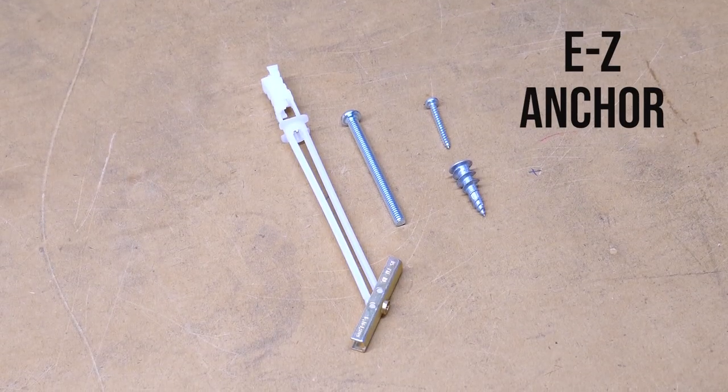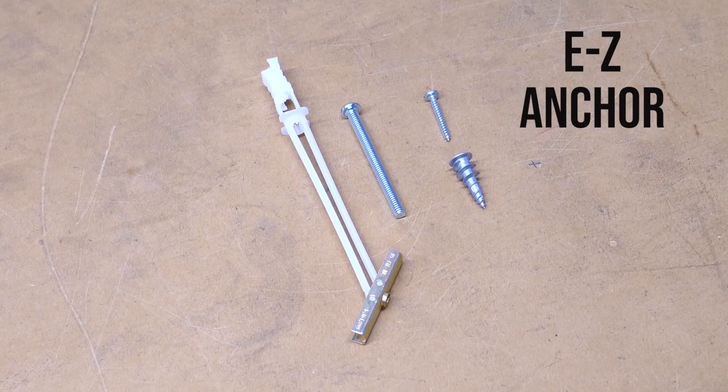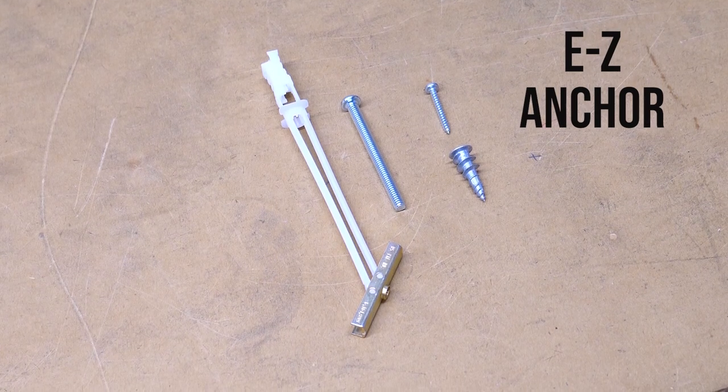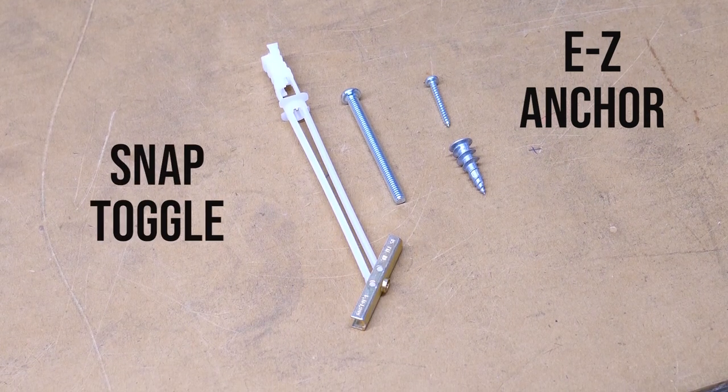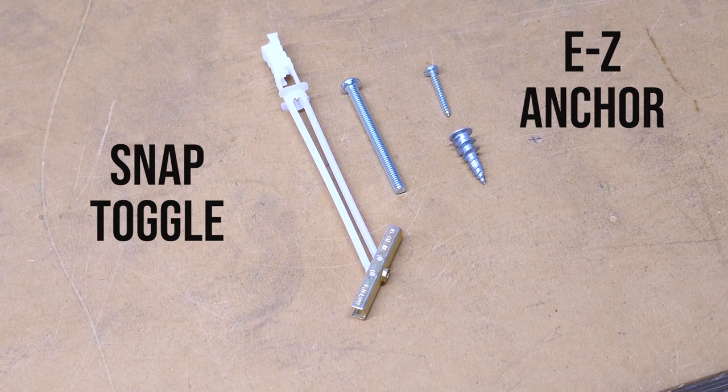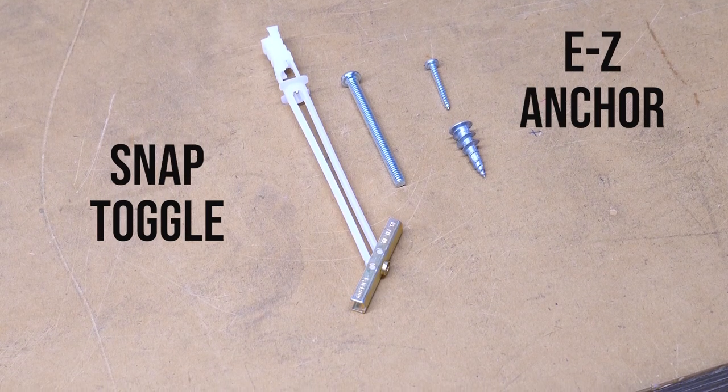My two favorite go-tos are these metal self-drilling drywall anchors, otherwise known as easy anchors, or these snap toggles. These easy anchors that I have here hold more than 40 pounds. I use them for any small box or shelf that I need to mount.